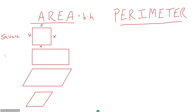For a rectangle, you have a length and a width. The length is just whichever side is the longer one, regardless of orientation. Length times width works, but in this case your width would be your height and your length would be your base, so base times height works as well.